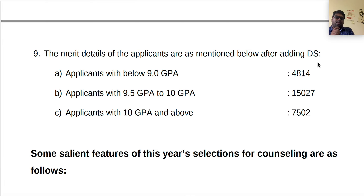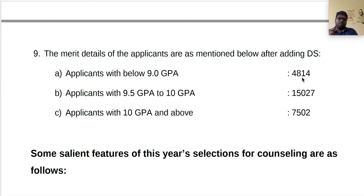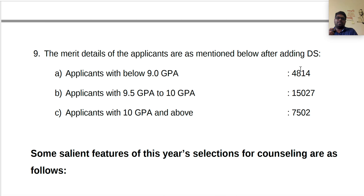After adding the deprivation score: applicants with below 9.0 CGPA (with deprivation score, not original marks) — 4,00,814 applications. Applicants with 9.5 to 10 CGPA — adding 0.4 deprivation score, so original 9.1 to 9.6 — 15,027 applications. Applicants with 10 CGPA and maximum 10.4 — 7,000-plus applications. This is the CGPA-based classification.